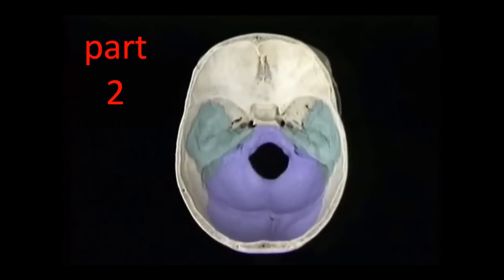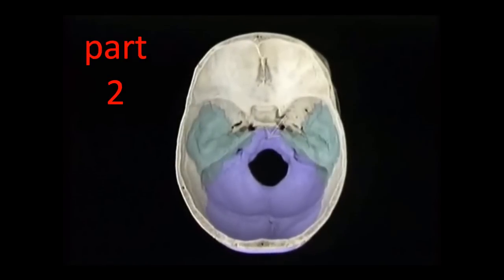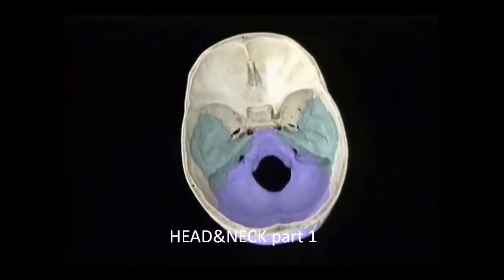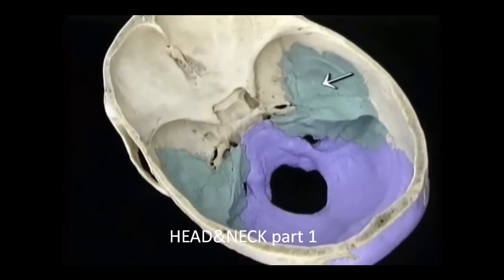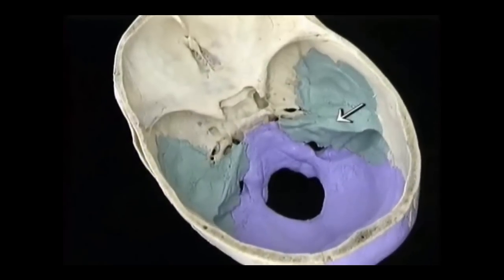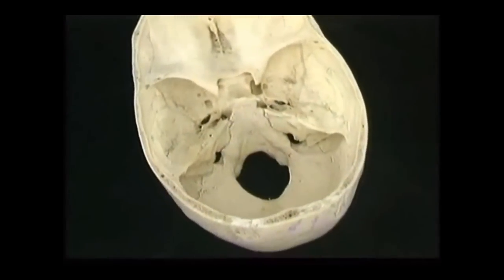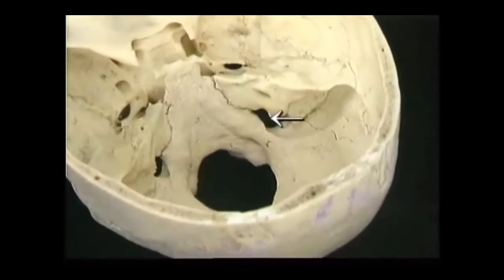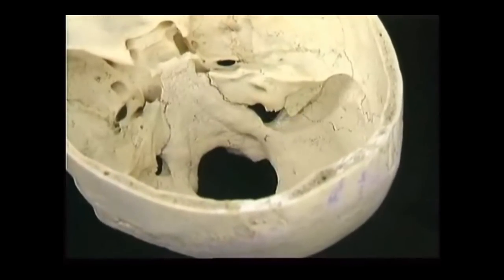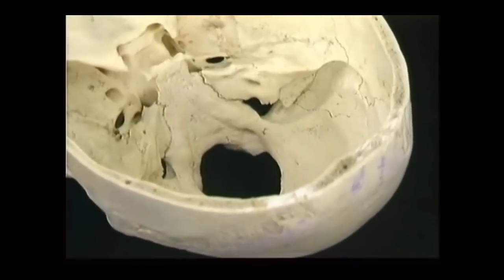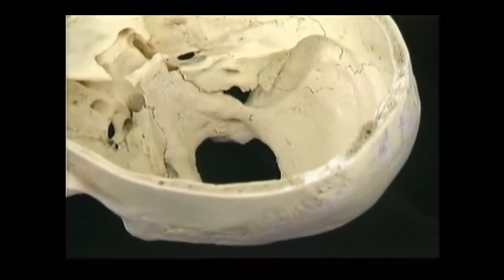Part of the occipital bone. Here's the basilar part. Here's the foramen magnum. Here's the squamous part of the temporal bone. Here's the petrous part, which contains the structures of the inner and middle ear. Here's the jugular foramen on the inside. This big groove behind it is for the sigmoid sinus, the main venous drainage channel for the brain.